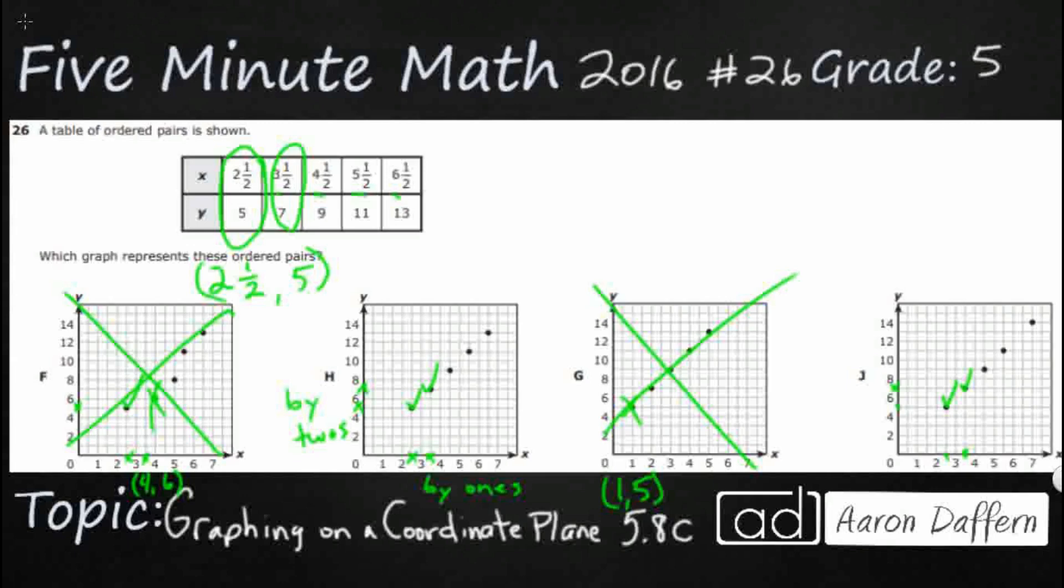F and G are gone. So let's take a look at this third dot. 4½, 9. So our x coordinate, we're going to the right first, is 4½. So that should be right there between 4 and 5. So that is good on H. And our y coordinate is 9 between 8 and 10. So it's looking pretty good right there. I'm going to put a bigger check mark on H.